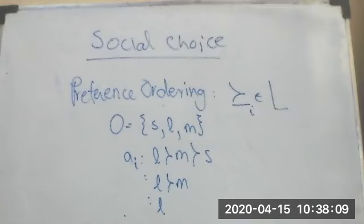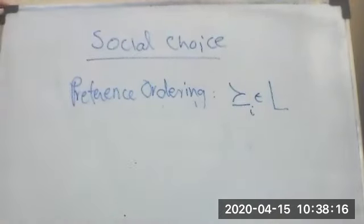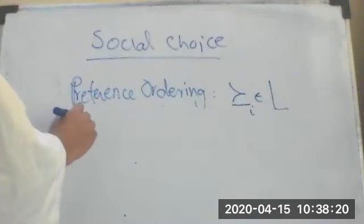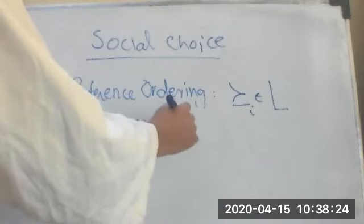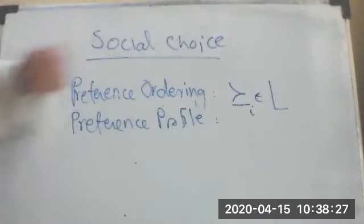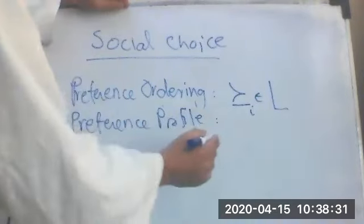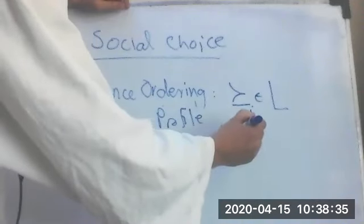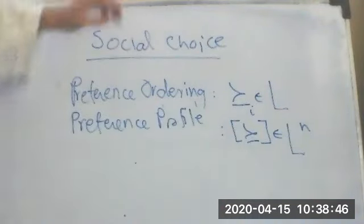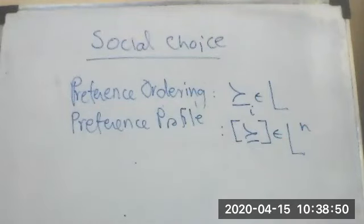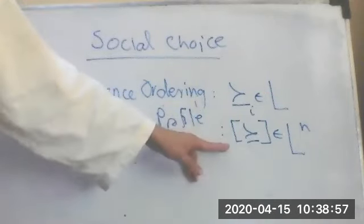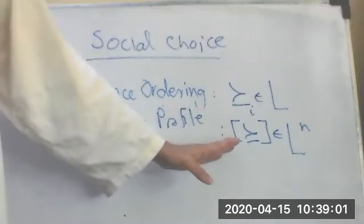Given this, we can define a preference profile of all the agents. One preference ordering is for one agent, and then we define a preference profile as a set of these preference orderings, represented with these brackets. A preference profile is an element of the cross product of these preference orderings, where N is the number of agents. So this is actually a tuple giving the preference ordering for N agents.